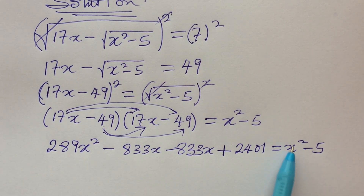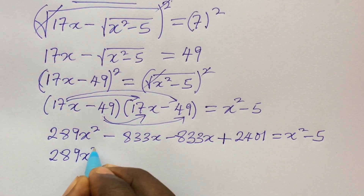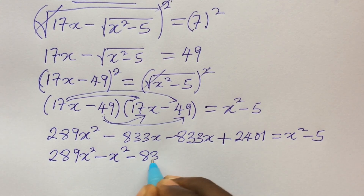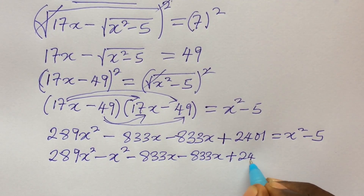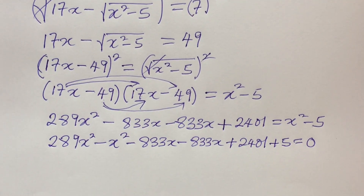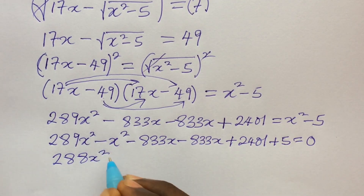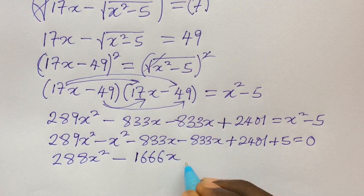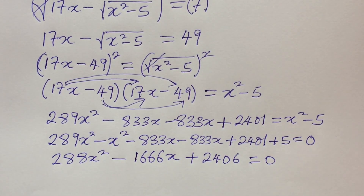We move all terms on the right-hand side to the left-hand side. Rearranging gives us 289x squared minus 833x minus 833x plus 2401, and the minus 5 crosses over to become plus 5, everything equal to zero. Carrying out addition and subtraction, we are left with 288x squared minus 1666x plus 2406, equal to zero.